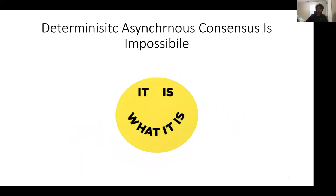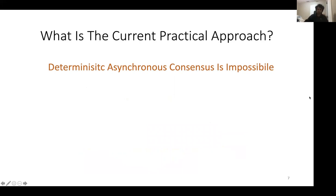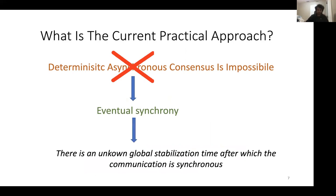Unfortunately, deterministic asynchronous consensus is impossible due to the famous FLP result. The question is therefore what is the practical approach. The answer is that practically most, if not all, deployed systems forego synchrony and instead assume eventual synchrony, which assumes that there is a known global stabilization time after which the communication is synchronous.